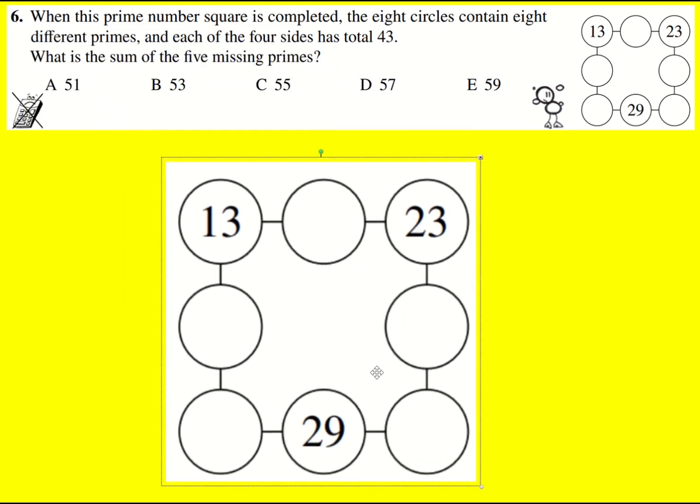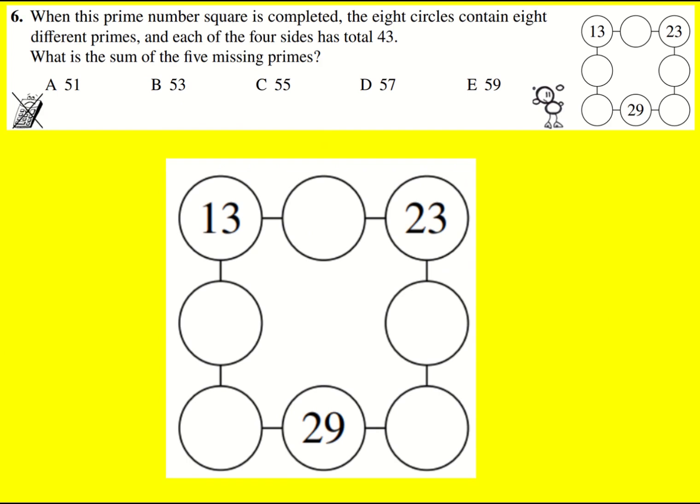A quick way of doing this question is not to work out the primes that are actually missing, but to just use the fact that the four sides all sum to 43. So these two must sum to 20.